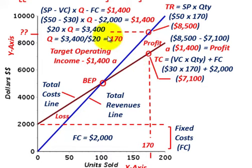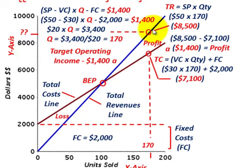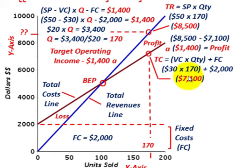Looking at it from revenues versus costs: total revenues at 170 units sold was $8,500, subtracting total costs of $7,100 gives a profit of $1,400 — confirming the targeted operating income calculation.